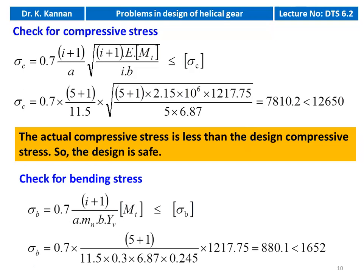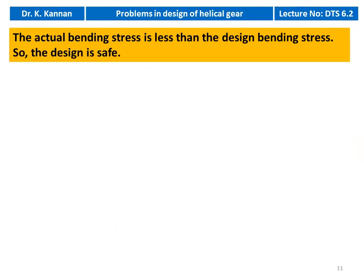We check the bending stress: σB = 0.7 × (i+1) / (a × m × b × Yv) × Mt. Substituting: σB = 0.7 × (5+1) / (11.5 × 0.3 × 6.87 × 0.245) × 1217.75 = 880 kg/cm², which is less than the design bending stress of 1652 kg/cm². The design is safe.